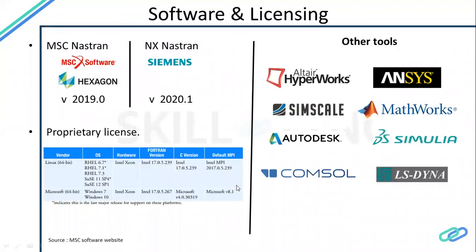Other tools that compete with NASTRAN include Altair HyperWorks, which supports almost all types of analysis; ANSYS, another major simulation software; SimScale, a newer company; Mathworks (MATLAB); Autodesk; Simulia; COMSOL; and LS-DYNA. All these companies have capabilities comparable to NASTRAN.